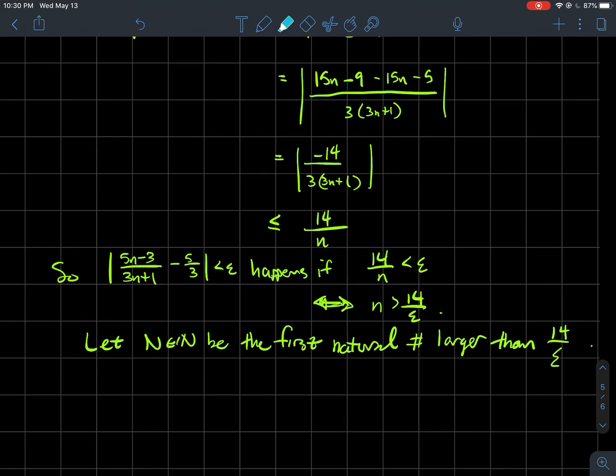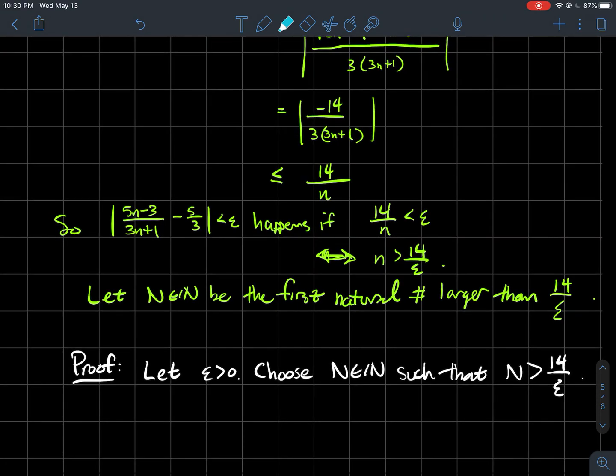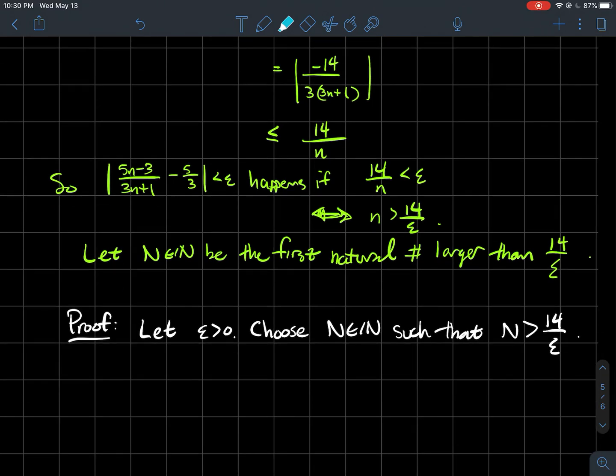Let N be the first natural number larger than 14/epsilon. Some textbooks might call this K of epsilon. The point is that N definitely depends on epsilon. Now we're ready for our formal proof. Let epsilon be greater than zero and choose N to be the first natural number such that N > 14/epsilon. For every index n ≥ N, we have the following.